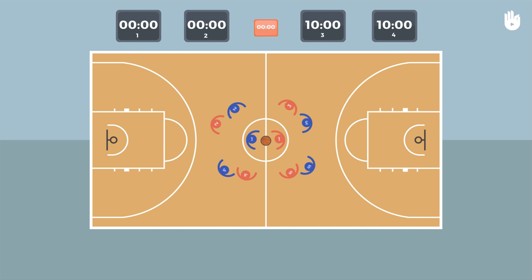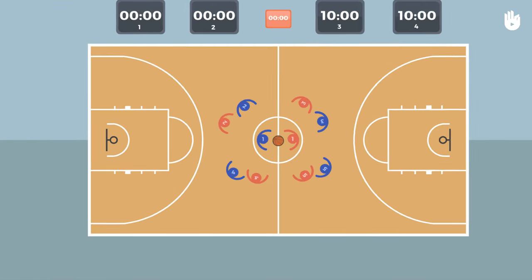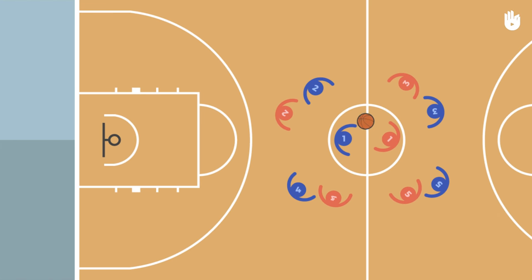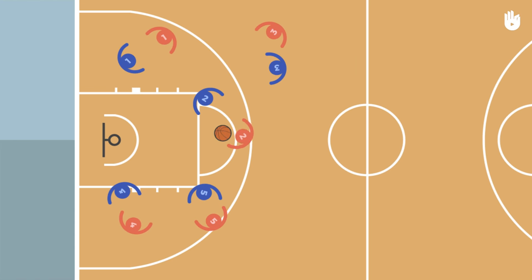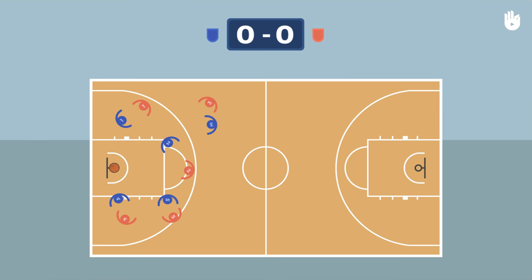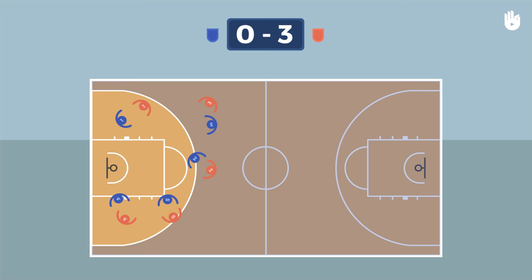The objective of both teams is to put the ball through the opponent's hoop to score as many points as possible. A scored shot, called a field goal, is worth two points, or three if the player has thrown the ball from outside the three-point arc.